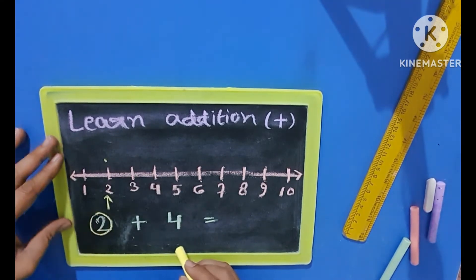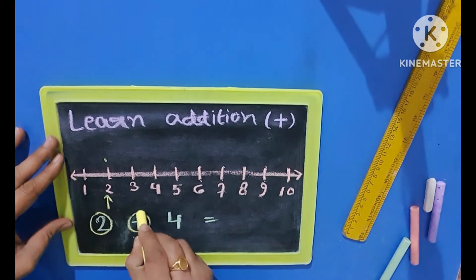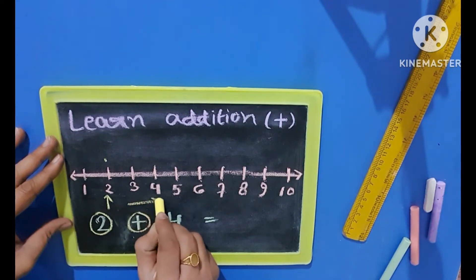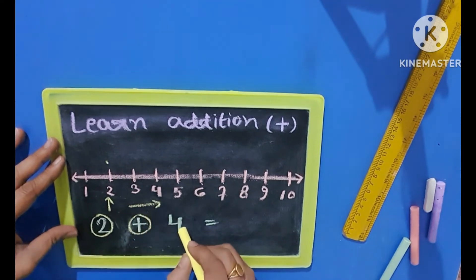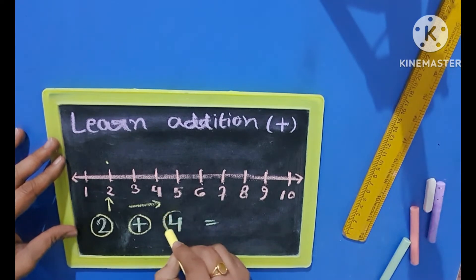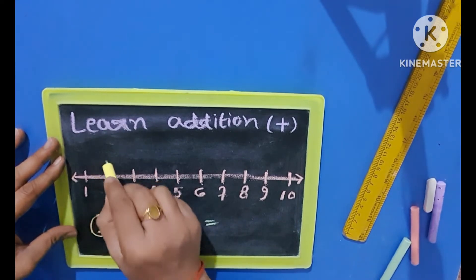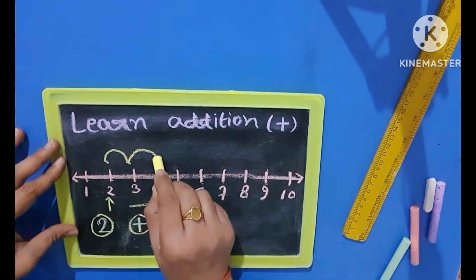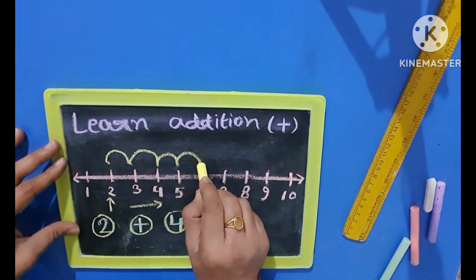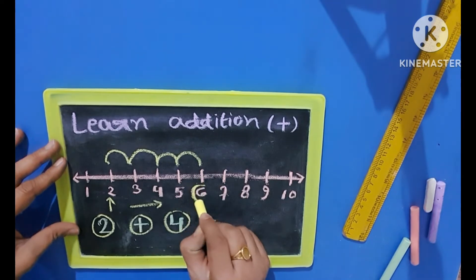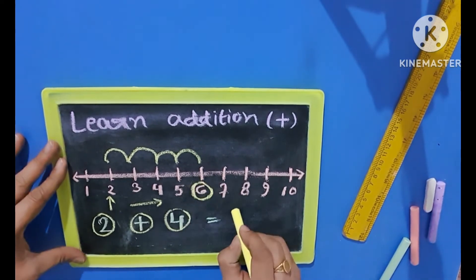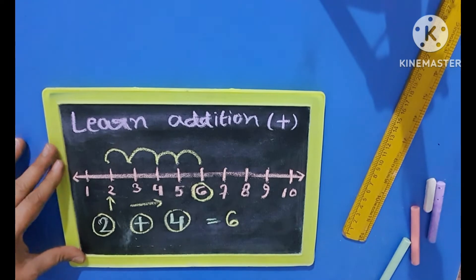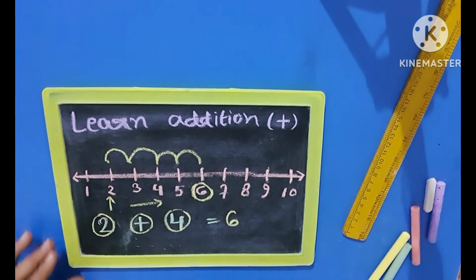Then after that we need to do addition so we will go forward. So here we have to add 4 so we will start from 2 and we will jump 4 times: 1, 2, 3, 4. And here we find the number 6.